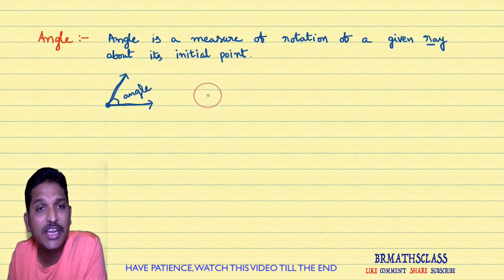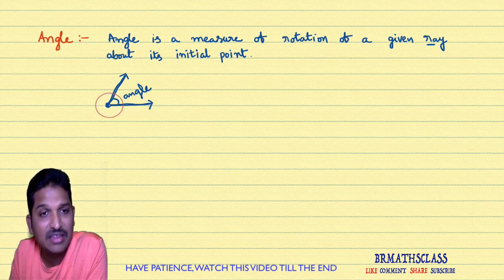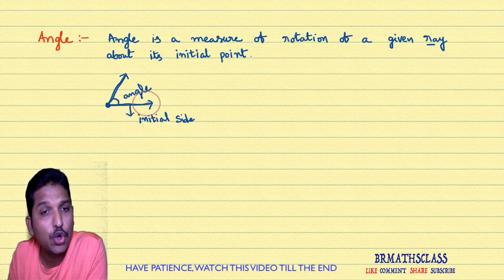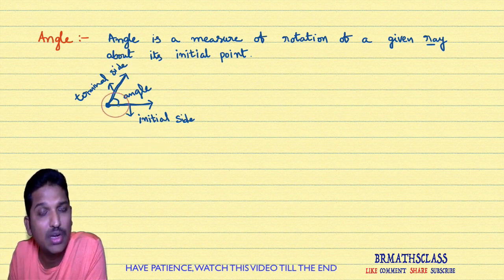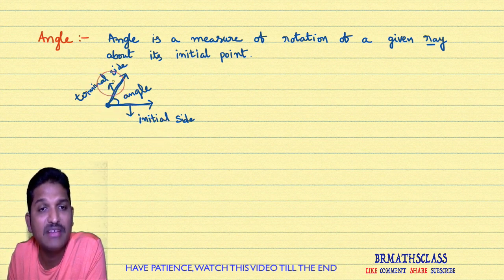In this angle, we need to know three things. One is initial side of an angle, and terminal side of an angle. What is initial side of an angle? The original ray is known as the initial side of an angle. After rotating the initial ray, whatever the final position of the ray is, that is known as the terminal side of an angle.